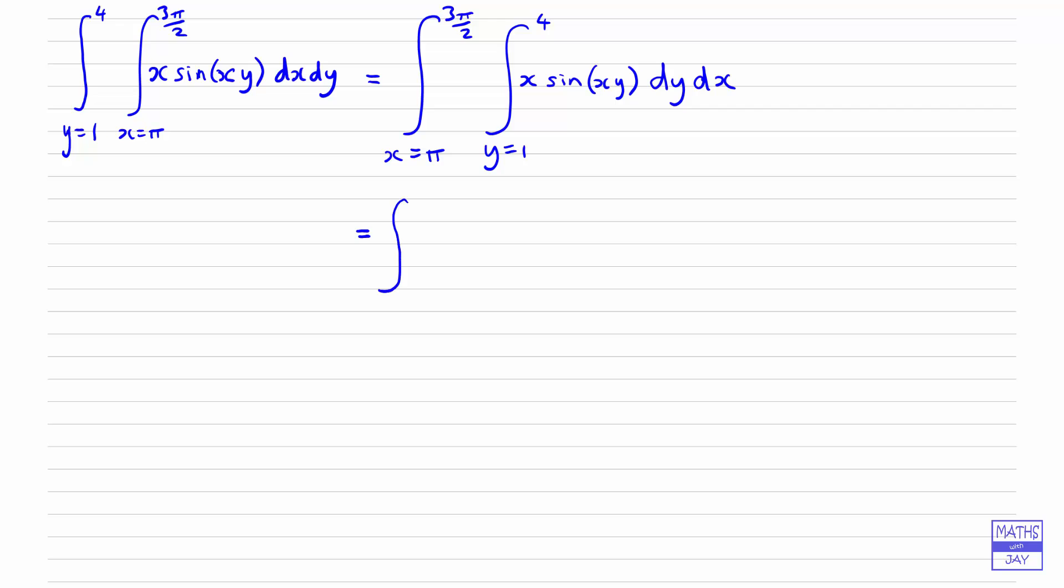So we leave the x equals pi to 3pi by 2 as it was, and now we do the integration. So we're looking at x sin(xy) dy, so y is the variable, x can be considered to be a constant. So we'll just write the constant x down, and then integrating sine, that will give us minus cos, so let's put the minus outside here and put the cosine in here.